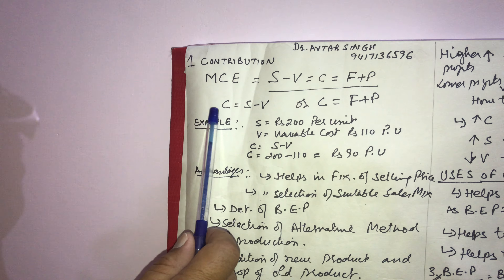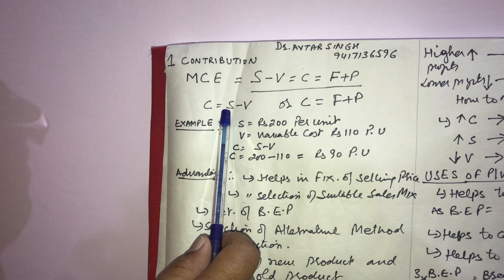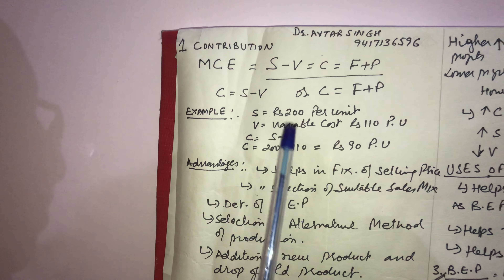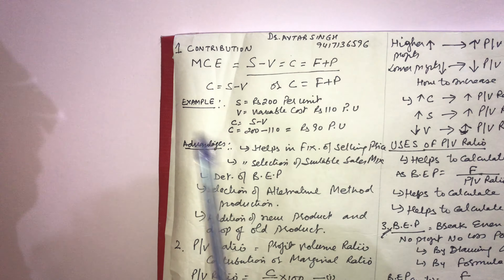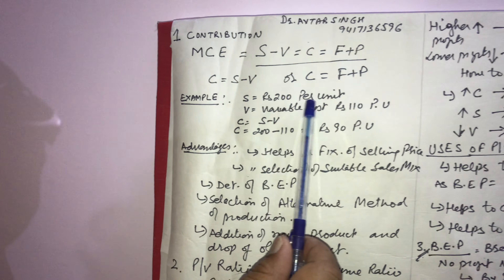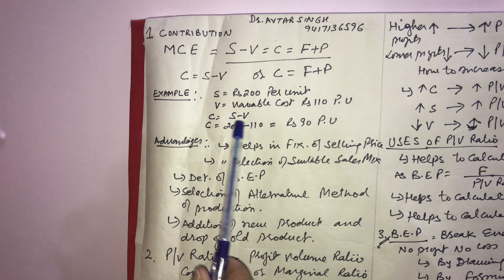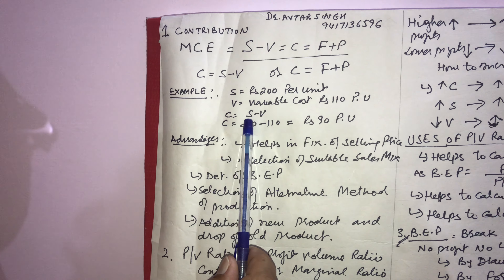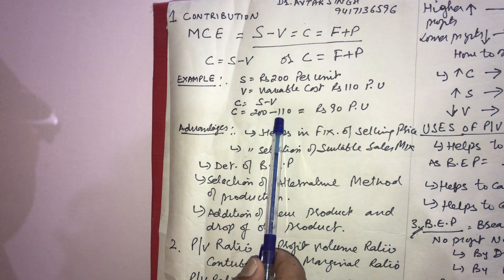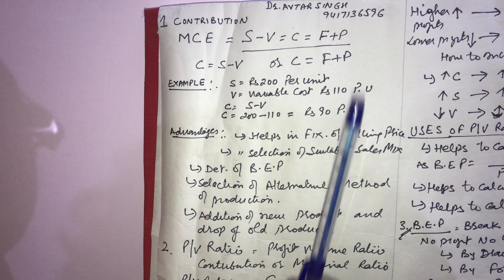C here is denoted as contribution. Contribution means excess of sales over variable cost — if we deduct variable cost from sales, the result is contribution. For example, sales is Rs 200 per unit and variable cost is Rs 110 per unit. Therefore contribution equals S minus V: 200 minus 110 equals Rs 90 per unit.